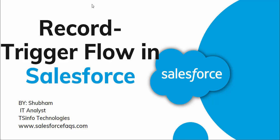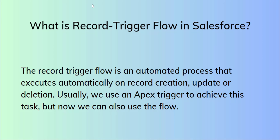Hello everyone and welcome to the channel. In this video we will see record trigger flow in Salesforce with action and related records. In the previous video we saw record trigger flow with fast field update. The record trigger flow is an automated process that executes automatically on record creation, update, or deletion.